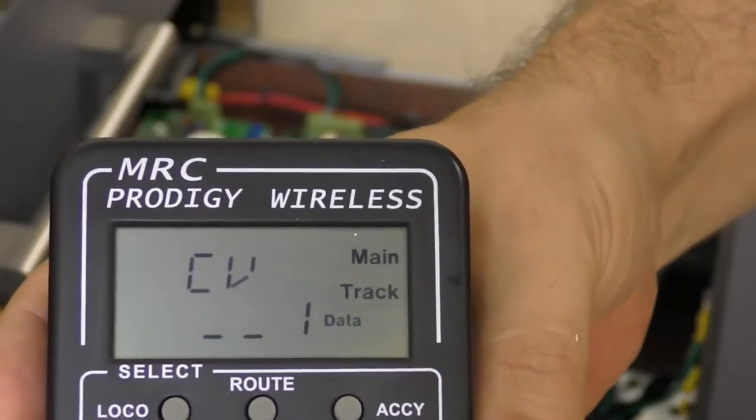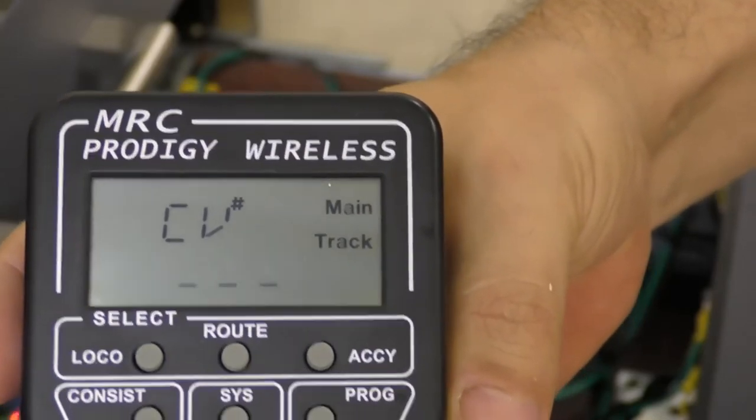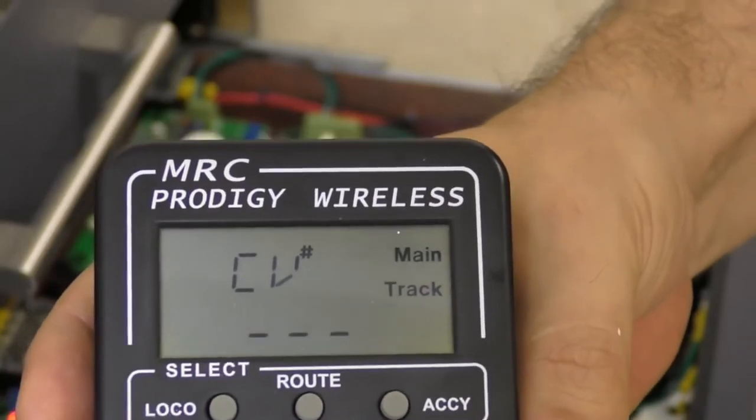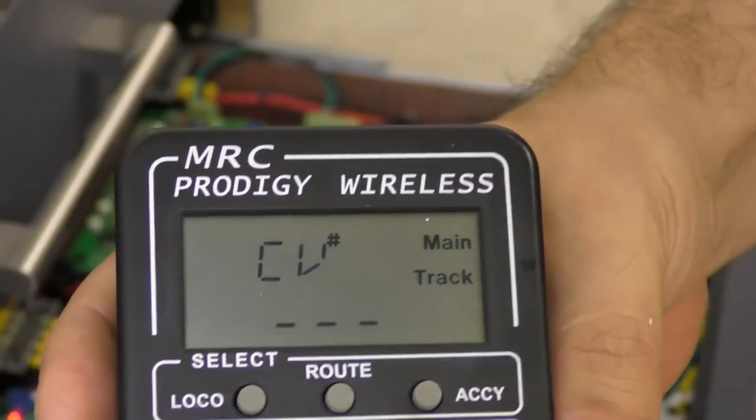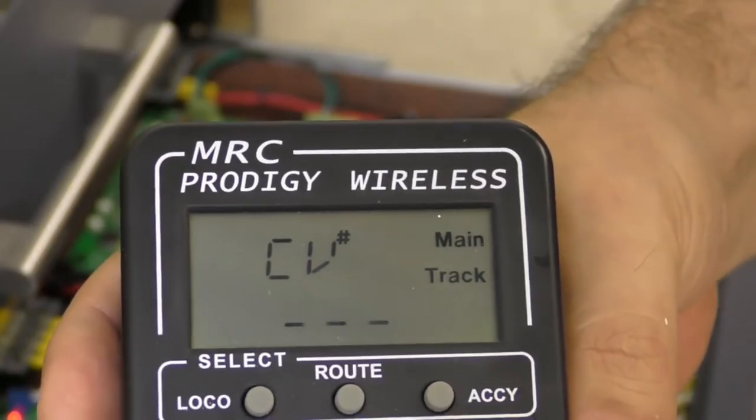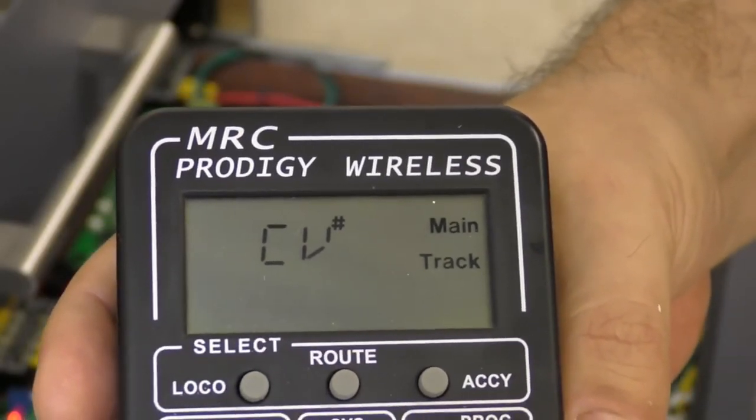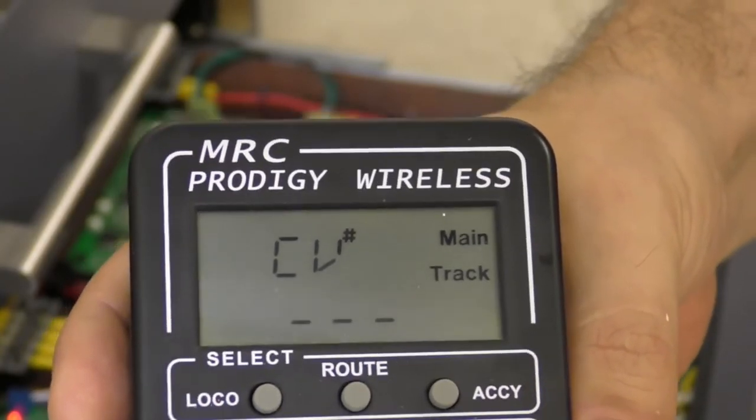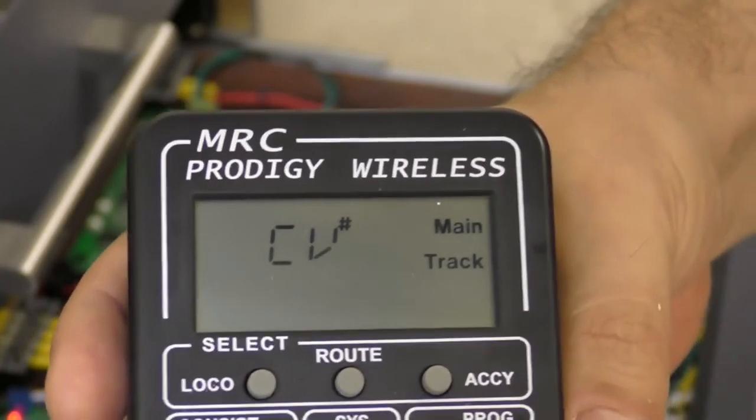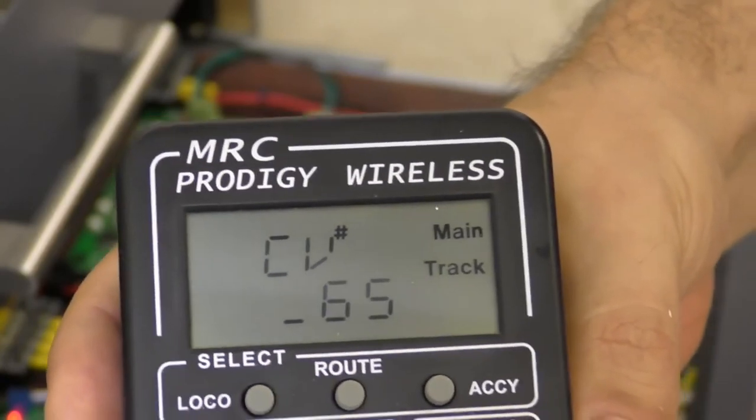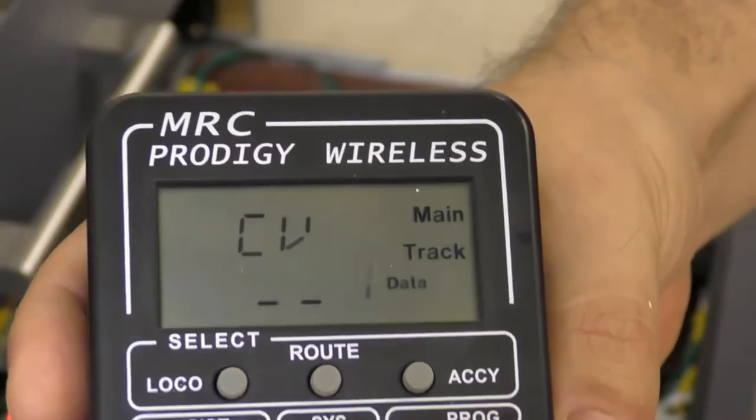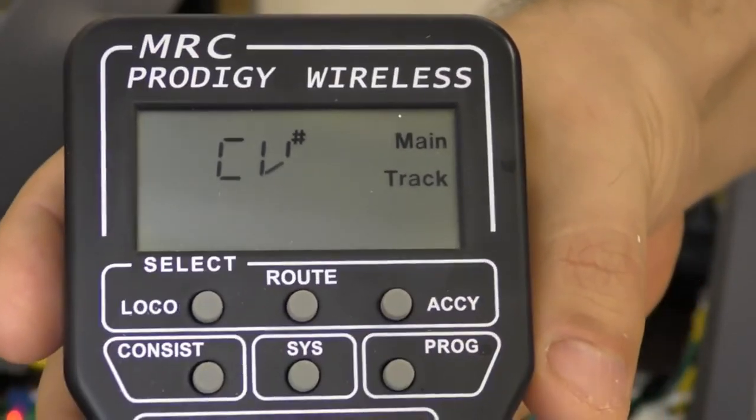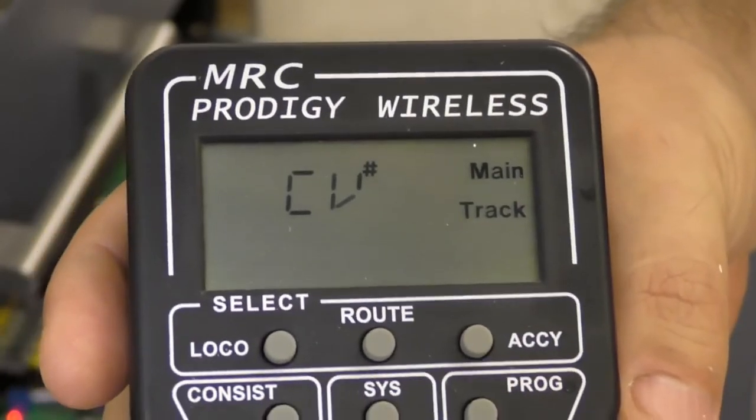Now the second part to this is now going to CV 65. CV 65 is all about the timing of when the PSX circuit breaker will kick in. By default these things are really fast so we actually need to slow it down a little bit, give a chance for the frog juicers to kick in first to switch that polarity. So now we're going to go to 65, press enter. I'm into it so I'm going to program 128 and now that's sent it to the board.